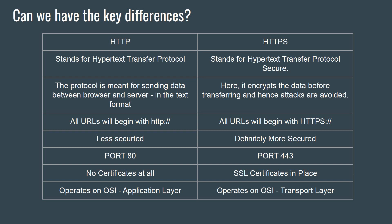Port number 80 is always associated with HTTP, while port number 443 is connected to HTTPS. No certificates are used in HTTP, whereas SSL certificates are used in HTTPS. HTTP operates at the application layer in the OSI model, while HTTPS operates at the transport layer. These are all the major differences you should know, and answering this way should be sufficient in an interview.